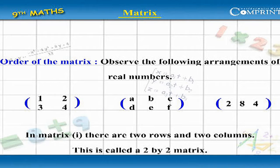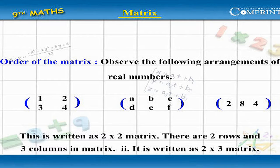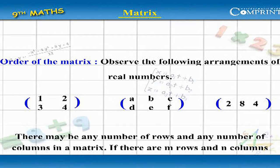Observe the following arrangements of real numbers. In matrix 1, there are 2 rows and 2 columns — this is called a 2 by 2 matrix. There are 2 rows and 3 columns in matrix 2, written as a 2 by 3 matrix. There may be any number of rows and any number of columns in a matrix.